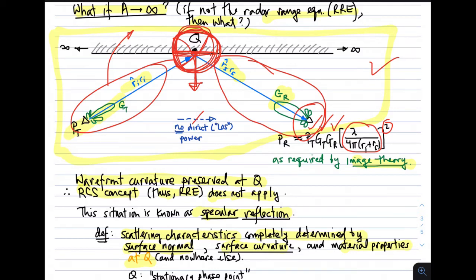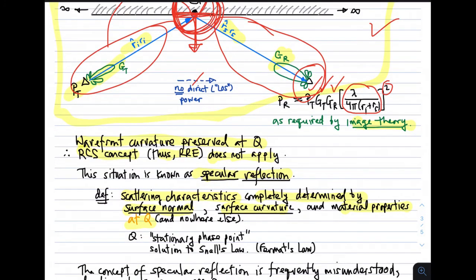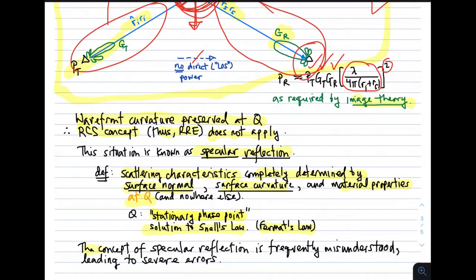Point Q is known as a stationary phase point. Undergraduates in electrical engineering are taught that this is a solution to Snell's law — angle of incidence equals angle of reflection — which is a geometrical interpretation of the stationary phase concept. Another interpretation, more prevalent in physics, is that Q is given by Fermat's law, which says the path is that which minimizes the total path length. These are three equivalent statements coming from different interpretations of the same scenario. Specular reflection is frequently misunderstood, leading to severe errors.